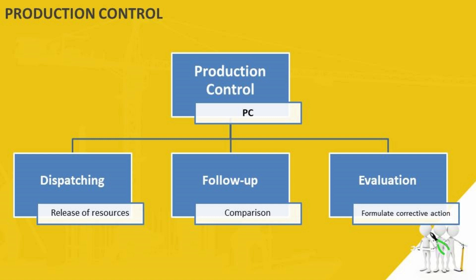Last but not the least, we have evaluation. Deviation of actual performance from the planned schedule is an unusual phenomenon — an anomaly. This can result from breakdown of machines, unavailability of raw material, poor performance of workmen, and many more reasons. Management also considers that a break at any point in the supply chain hampers the complete series of operations. Therefore, a periodic evaluation is essential to formulate corrective action and bring operations back on schedule.